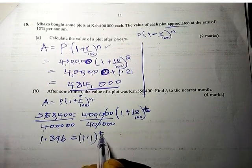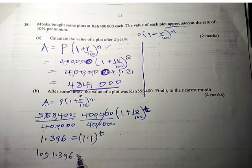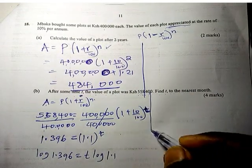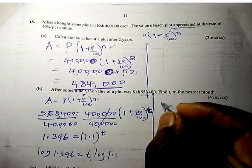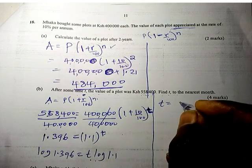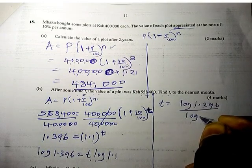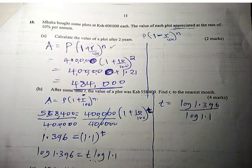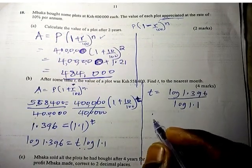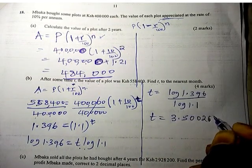Now you introduce the logs. So log 1.396 equals T log 1.1. Now to get the T, divide by log 1.1 both sides. So log 1.396 divided by log 1.1 gives us T equals 3.500266.